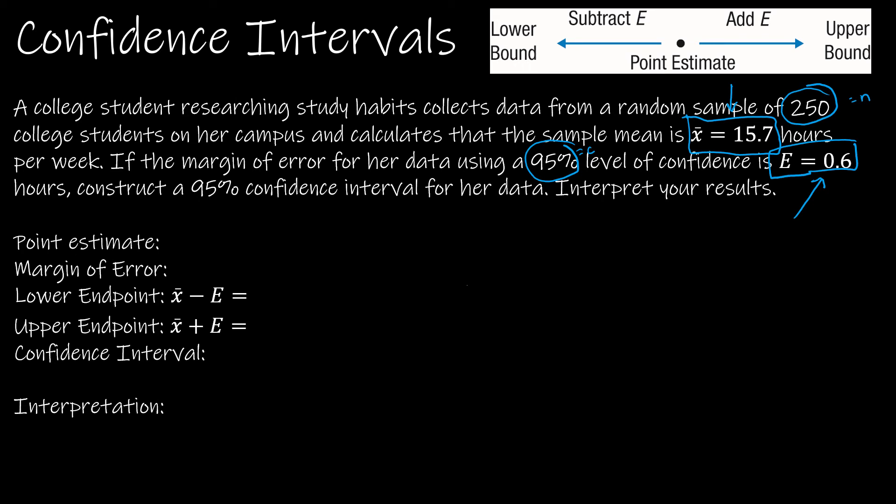So the point estimate is our sample mean. So our point estimate is that x̄ of 15.7 hours. The margin of error is E, which has already been calculated for us at 0.6.